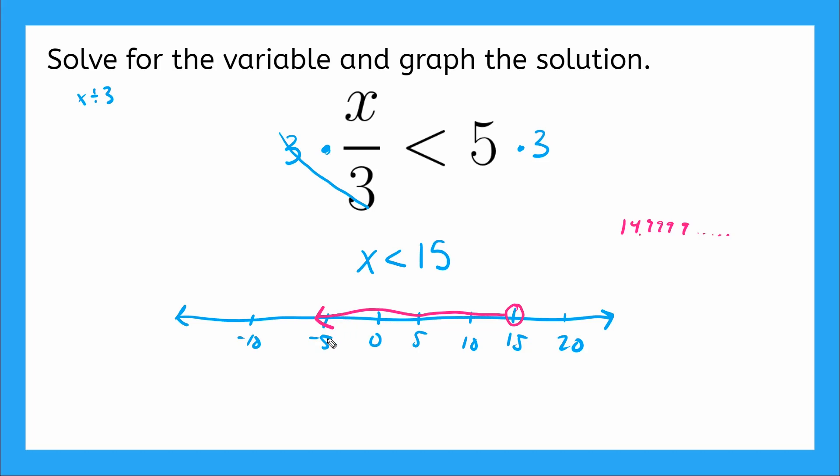Should we do a test here? What is a number that is part of our solution set? We can substitute in to double check. How about this 0 right here? What would happen if x is equal to 0? Well, we'd have 0 over 3 is less than 5.